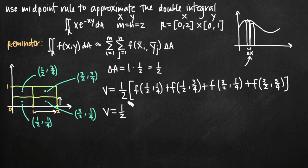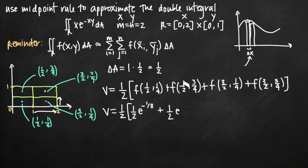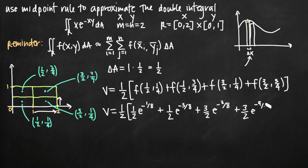Evaluating the function xe to the negative xy at each point: f(1/2, 1/4) gives one half times e to the negative one eighth, since negative one half times one fourth equals negative one eighth. f(1/2, 3/4) gives plus one half e to the negative three eighths. f(3/2, 1/4) gives plus three halves e to the negative three eighths, since three halves times one fourth equals three eighths. f(3/2, 3/4) gives plus three halves e to the negative nine eighths, since three halves times three fourths equals nine eighths.